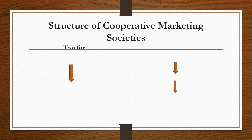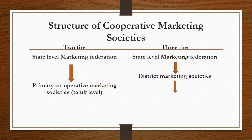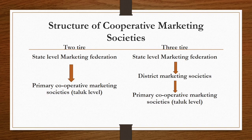Regarding the structure of cooperative marketing: in the two-tier system, a state-level marketing federation is at the top with primary cooperative marketing societies at the taluk level. Under the three-tier system, there is a state-level marketing federation, then district market societies, and finally primary cooperative marketing societies. In the two-tier system there are only two stages — state level and taluk level — while in the three-tier system, district marketing societies are active between state and taluk levels.